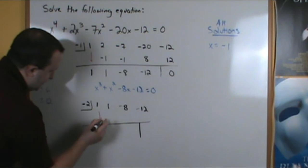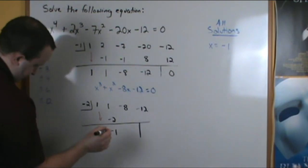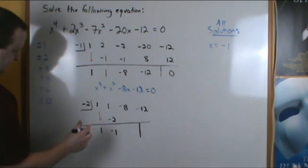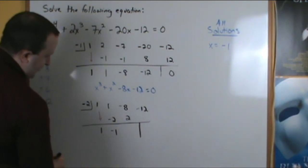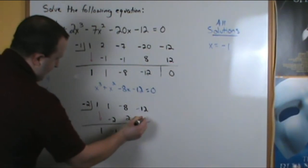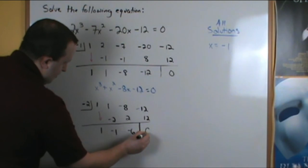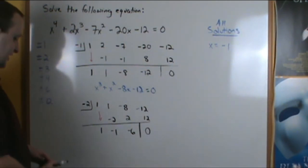We got 1. Negative 2 times 1 is negative 2. 1 plus negative 2 is negative 1. Negative 2 times negative 1 is a positive 2. Negative 8 plus 2 is negative 6. Negative 2 times negative 6 is positive 12. And we get 0. So that means x equals negative 2 is a solution.